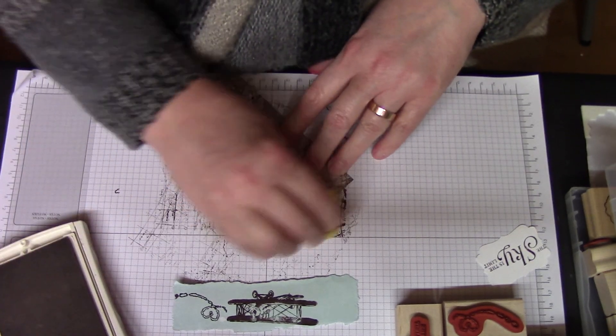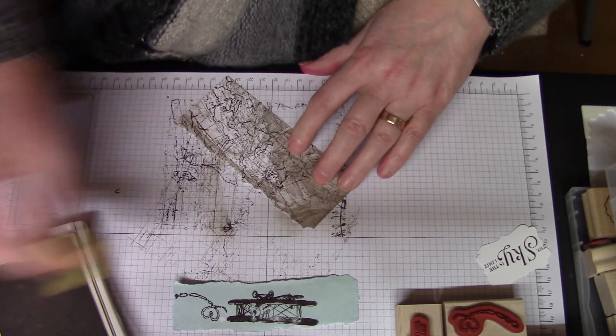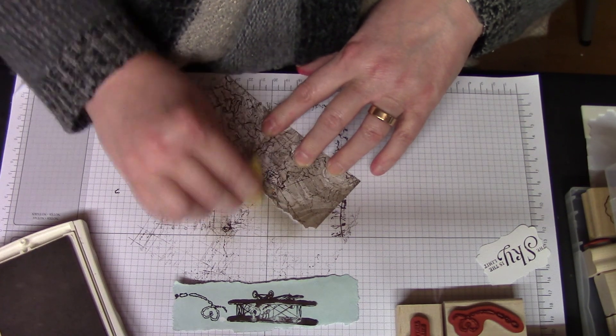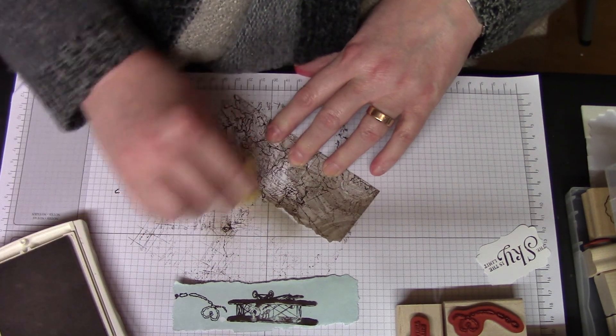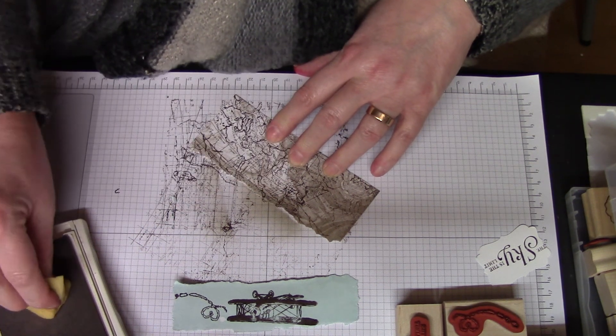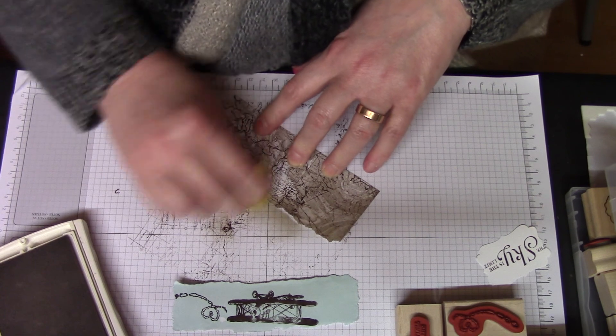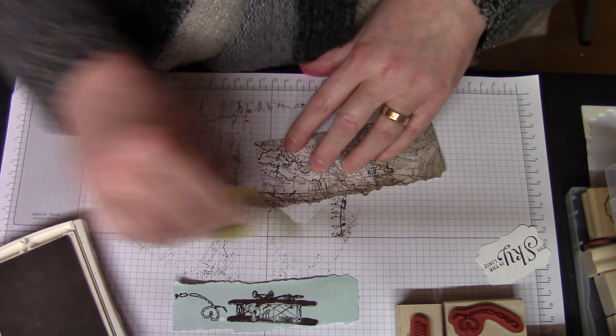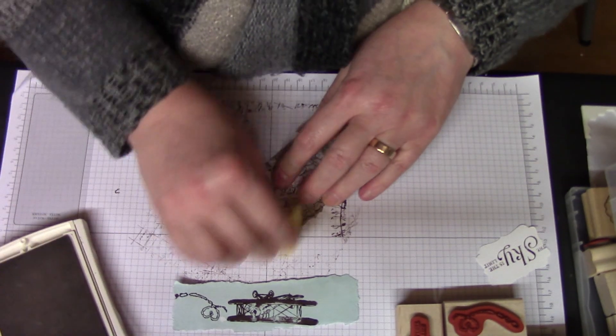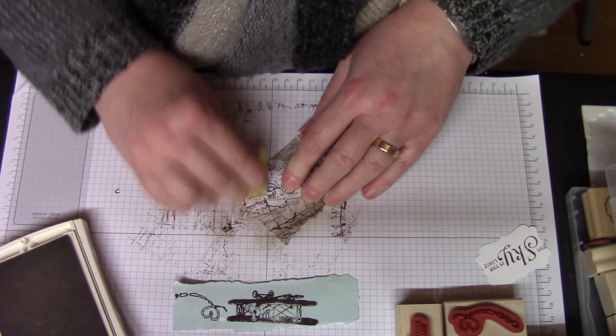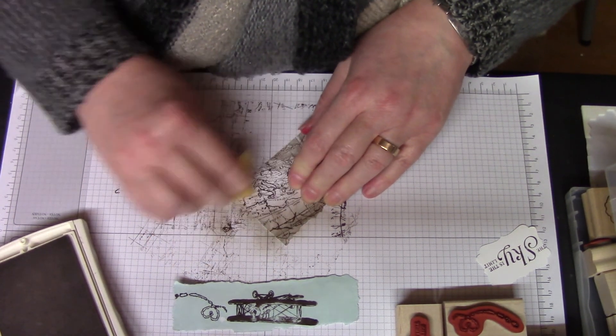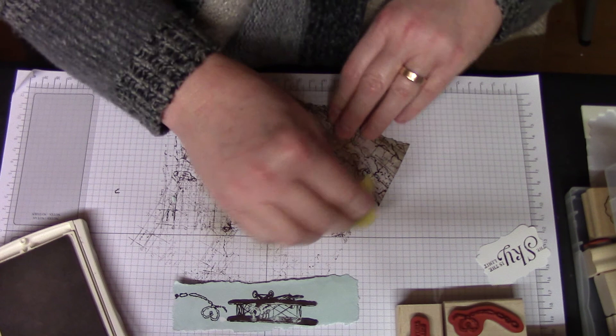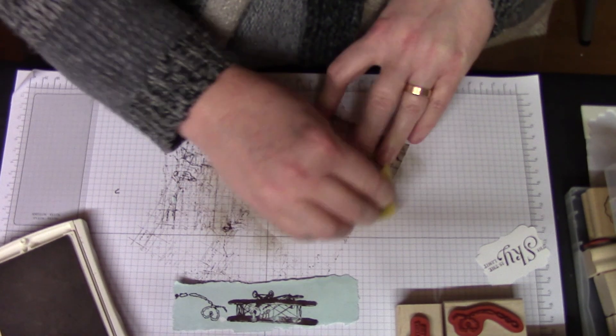If you add in things like Cajun Craze, which is very much like something called Rusty Hinge, there are inks in Stampin' Up's repertoire that will mimic pretty much the color of anything that other companies do. The benefit for me is Stampin' Up, everything is coordinated. It's coordinated into color collections, making it easy.